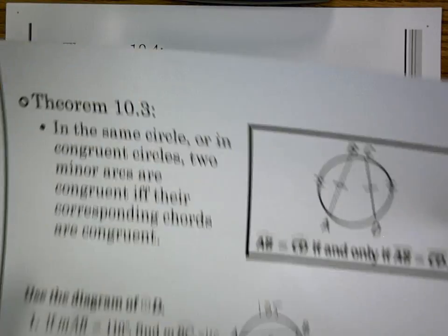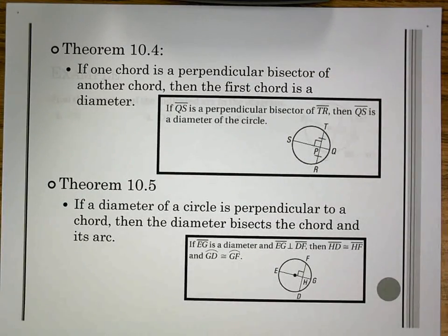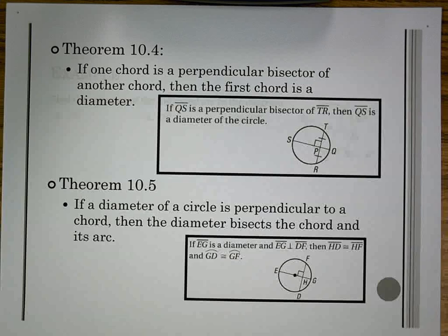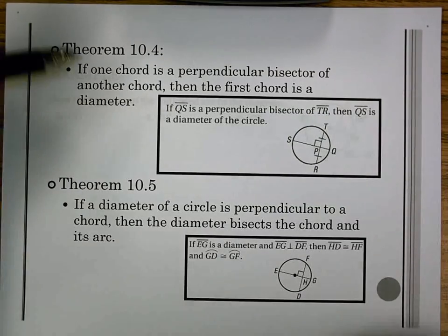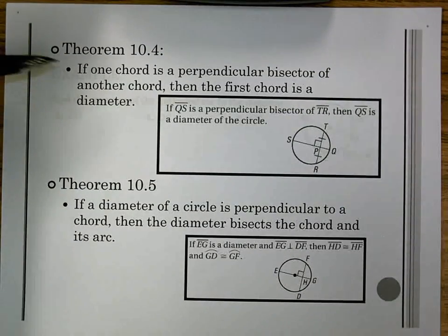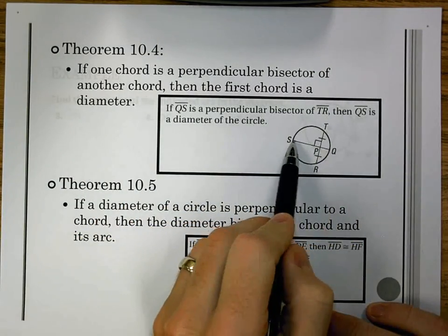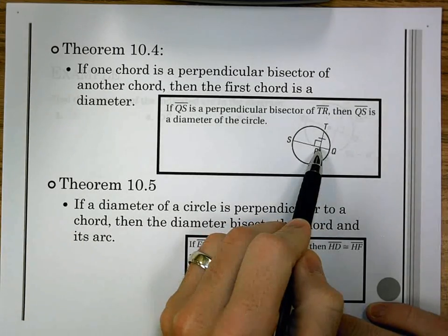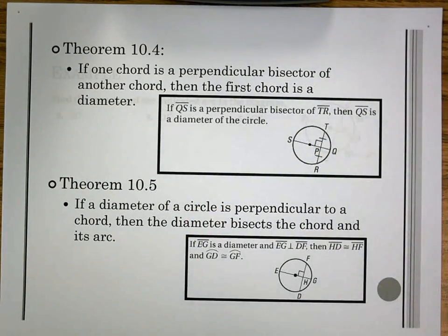We can use the fact we have 360 in the circle. Our next one says theorem 10.4. If one chord is a perpendicular bisector of another chord, then the first chord is a diameter. If we look at our diagram, QS is a perpendicular bisector of TR. So QS cuts TR in half and does so at a 90 degree angle. If it does that, that's saying that QS is a diameter, which means it goes through the center.